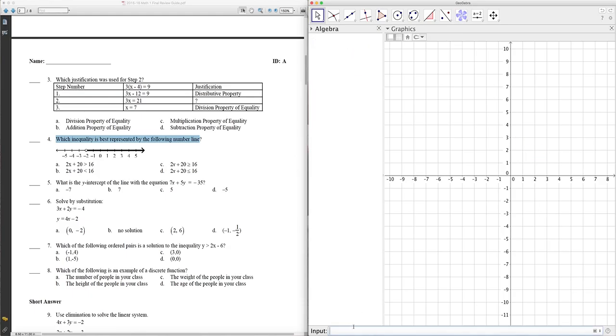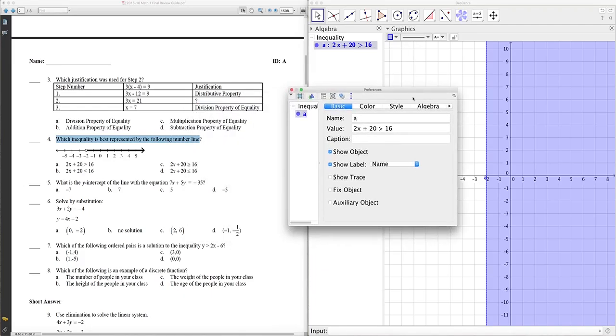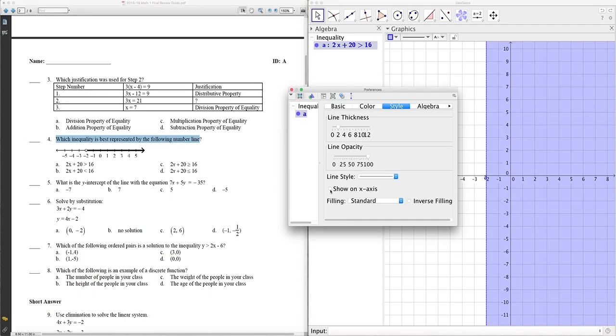Let's try it. So let's go down to the input bar, start with A. You have to go through all four to see which one's the correct graph. So we'll start with A, 2x plus 20 is greater than 16. Enter. That does not look like a number line. So what happened? Well, if you right click on the inequality and go to object properties, where it says style, that third option, there's a check mark that says show on axis. And that just changes the style of your graph there. It's not a shaded region. It's actually a number line, right?